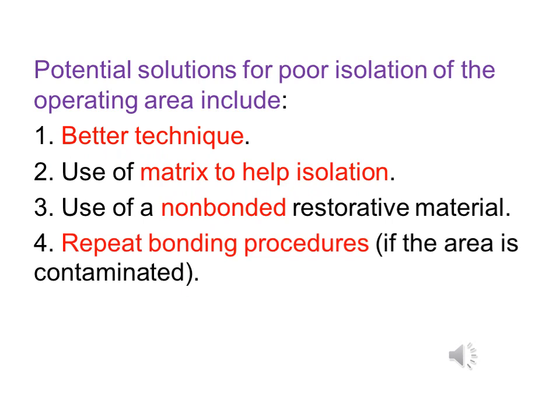Solutions for poor isolation of the operating area: Number one, use a better technique for isolation with good adaptation and sealing of the rubber dam. Number two, use a matrix band retainer to help isolate the cavity preparation. Number three, use non-bonded restorative material. Number four, repeat the bonding procedure if the area is contaminated — re-treat by acid etching, bonding, and then placing the composite, repeating from the beginning to achieve a good result.